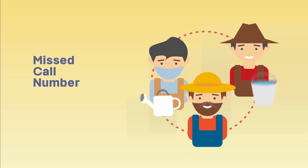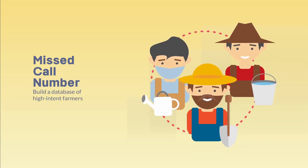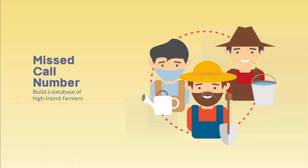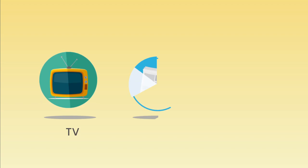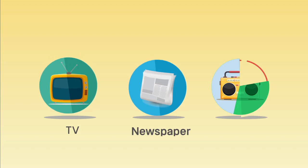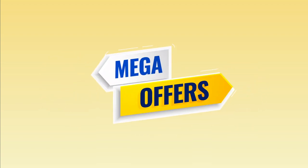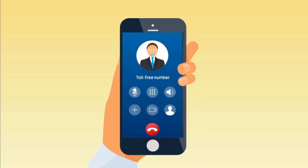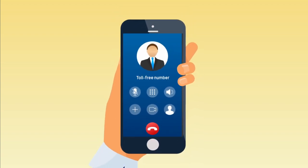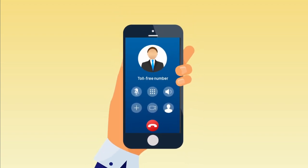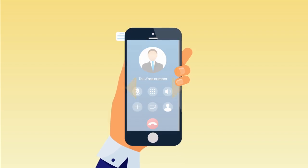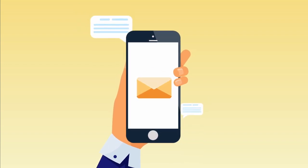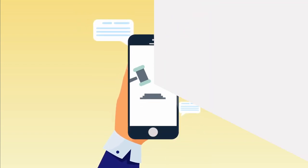Missed Call Number: Build a database of high-intent farmers. A number is advertised on TV, newspaper, or radio along with an offer. Farmers call the number if they find the offer compelling. The call gets disconnected after two rings and they receive a text message confirming their bid on the offer.